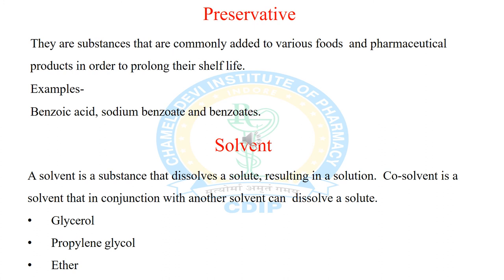The next additive is solvent. A solvent is a substance that dissolves a solute, resulting in a solution. A co-solvent is a solvent that, in conjunction with another solvent, can dissolve a solute. Co-solvents are mainly used to enhance the solubility of the drug. Examples of co-solvents are glycerol, propylene glycol, and ether.